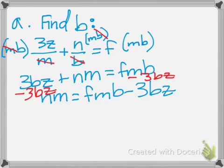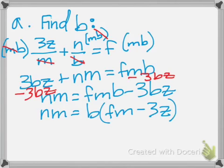The next step is to pull b out of the right side. So, when we pull that out, we get b on the outside and fm minus 3z on the inside.